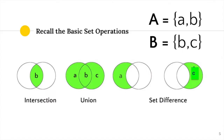Before we start with join operations, let us recall the basic set operations: intersection, union, and set difference. Using set A and set B as an example, the intersection of A and B is the element B. The union of set A and B are the elements A, B, and C. The set difference differs with respect to position — A minus B is element A, and B minus A is element C.